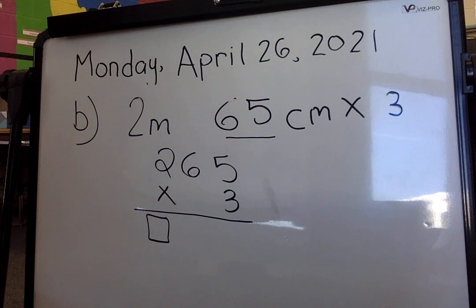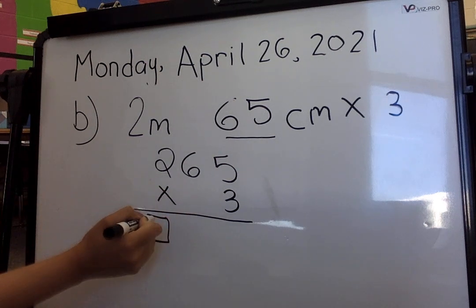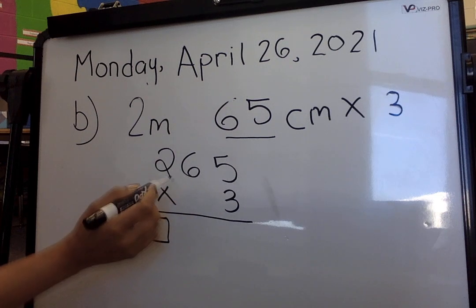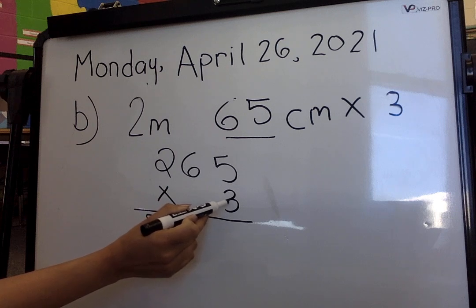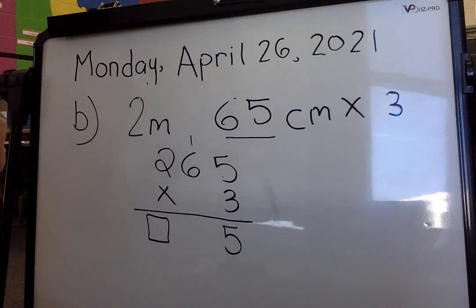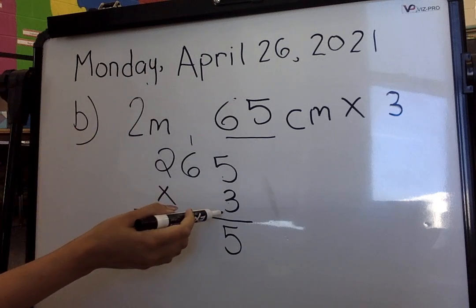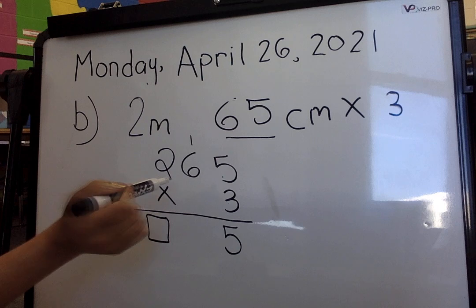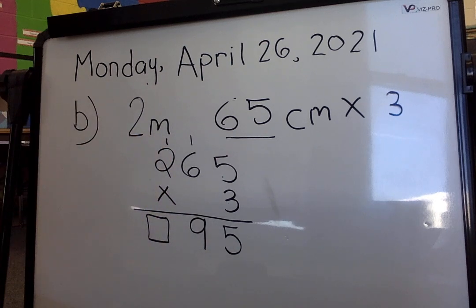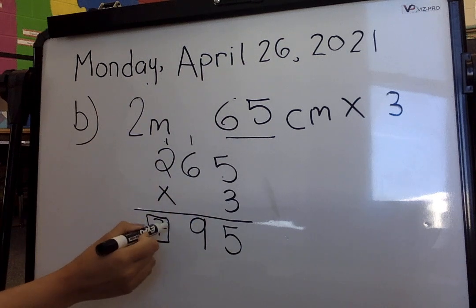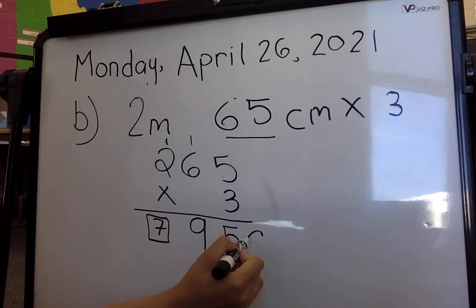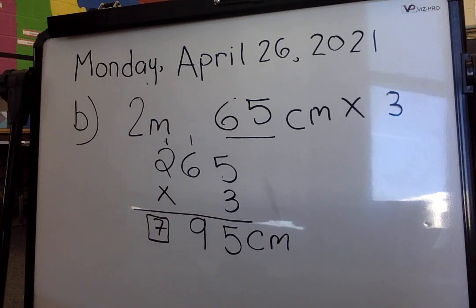So whatever shows up in the hundreds column — for example, 3 times 5 gives me 15, carry the 1; 3 times 6 gives me 18 plus 1 is 7 — wait, we first multiply the ones: 3 times 5 gives 15, carry 1; 3 times 6 gives 18 plus 1 is 19. So how many meters do we have? 7 meters and 95 centimeters. That's how you do these questions.